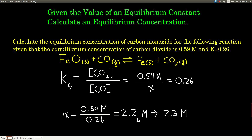The first thing we do is write down the equilibrium constant expression. K equals products over reactants. Remember, solids and liquids we don't write — we just ignore them. So the only things here that aren't solid are carbon dioxide and carbon monoxide. Both coefficients are 1, so the powers are 1. We know the concentration of carbon dioxide is 0.59 molar, so we plug it in. The concentration we don't know, we just call it x.